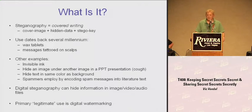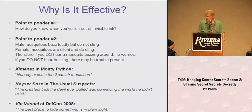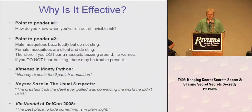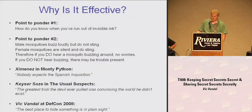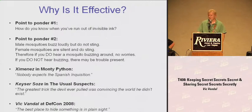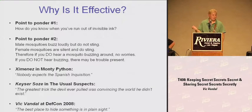Digital steganography hides information in digital files. Why is it effective? The best place to hide something is in plain sight. Stego is effective because people take what their eyes see on face value as a rule. If you get pulled over and you have a six-pack of soda along with some groceries and a receipt from the grocery store, border patrol or cops searching your car see that six-pack of soda and think nothing of it.